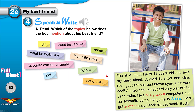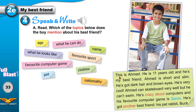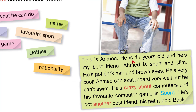Read with me: This is Ahmed. He is 11 years old and he's my best friend. Ahmed is short and slim. He's got dark hair and brown eyes. He's very cool. Ahmed can skateboard very well, but he can't swim. He's crazy about computers, and his favorite computer game is Spore. He's got another best friend — his pet rabbit, Buck.